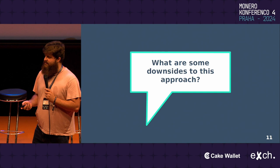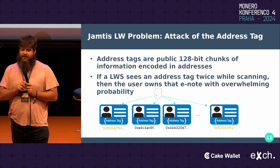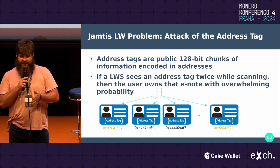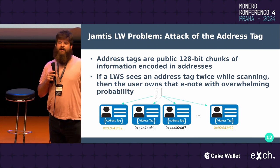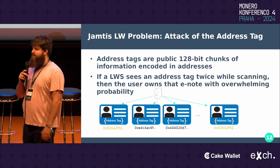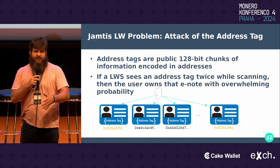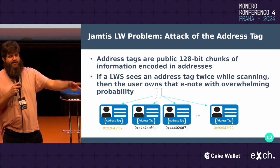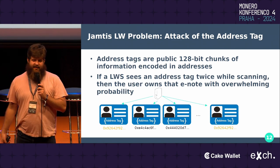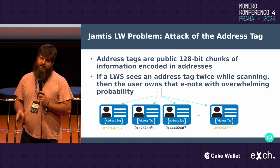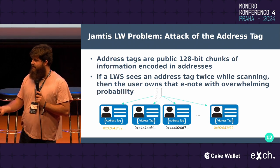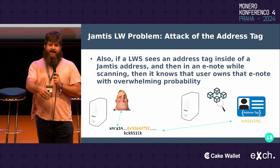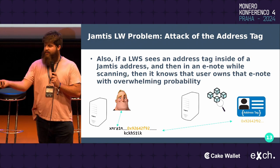What are some downsides to this approach? The address tags are actually 128-bit chunks of information encoded in the public address, so this is actually public information some of the time to your receivers. You generate them randomly, and since it's 128 bits, if the LightWallet server is scanning and two address tags show up, that's an overwhelming probability that it is the same person — you probably know that they own those e-notes, even if you don't know the amounts.